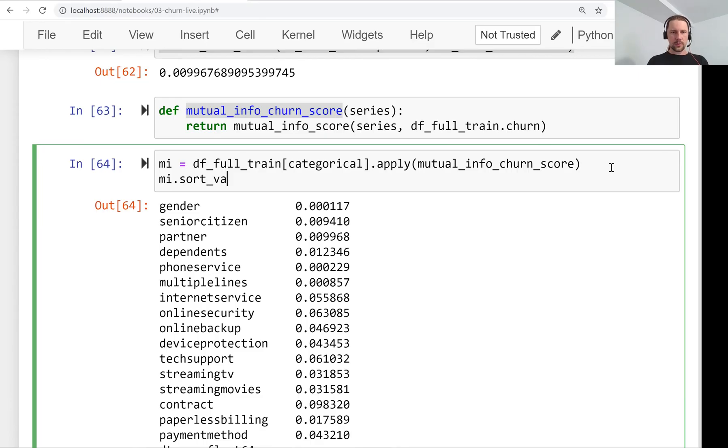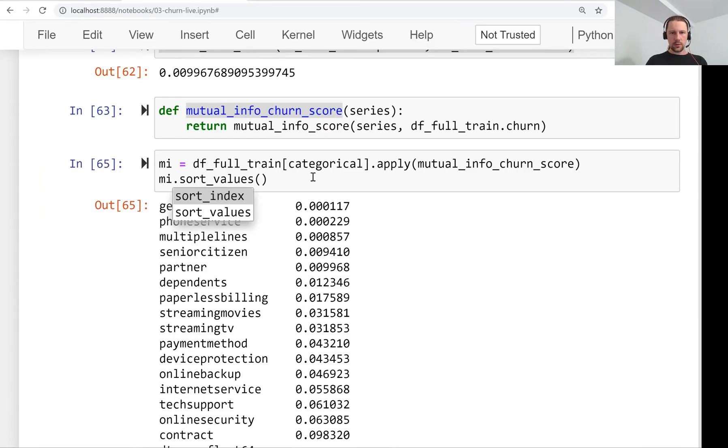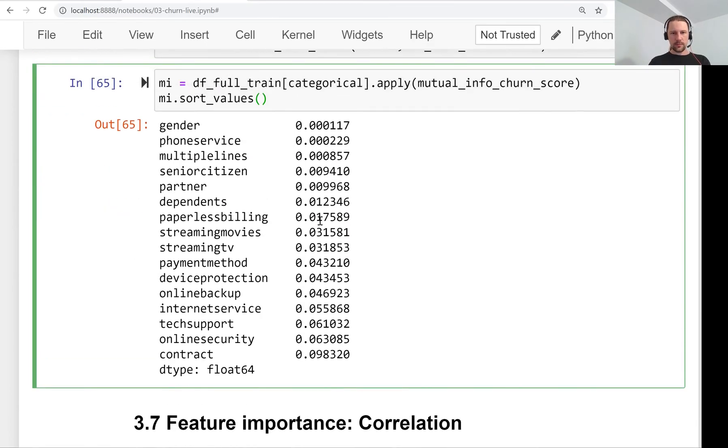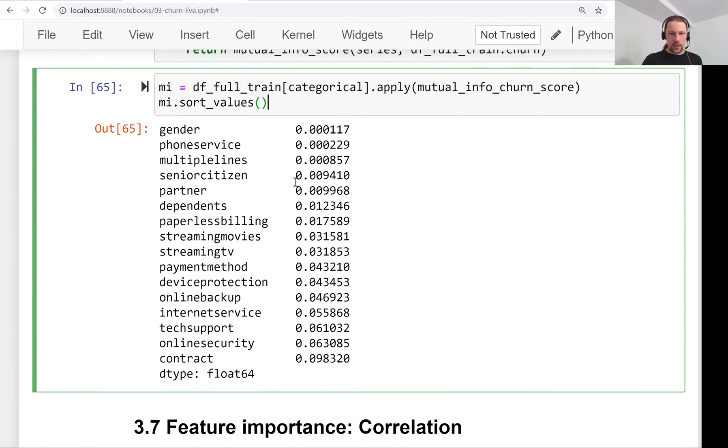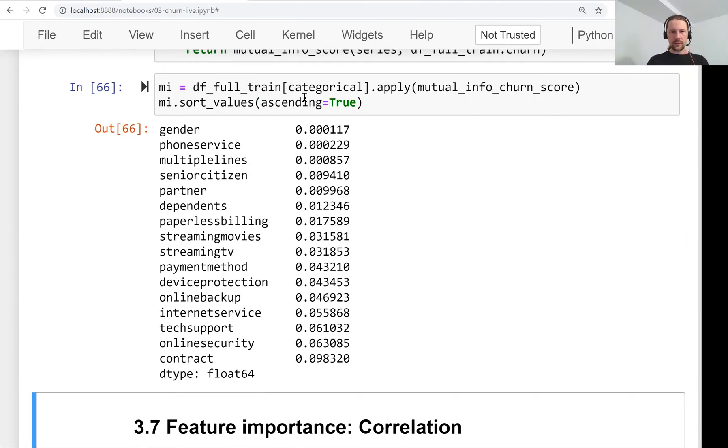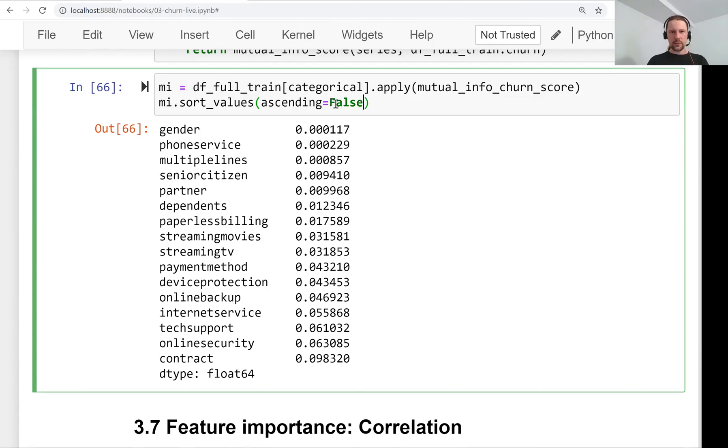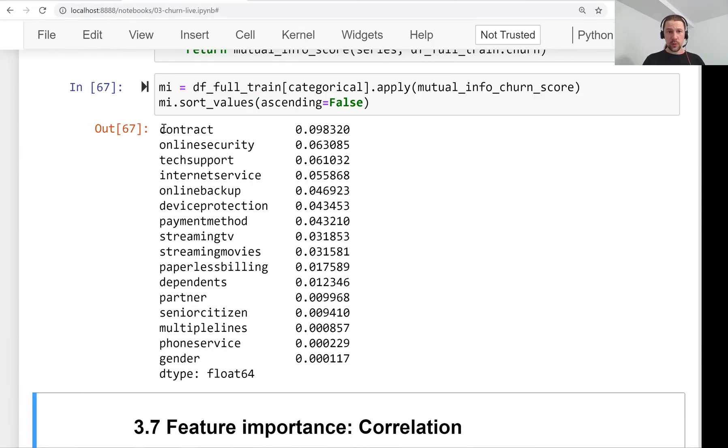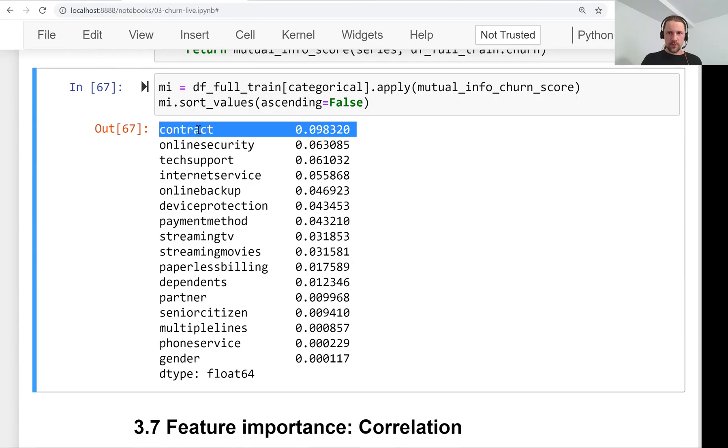We need ascending equals false—we want the most important ones to come first, the least important ones to come last. What we can see here is that contract is the most important variable, and gender is the least important one.